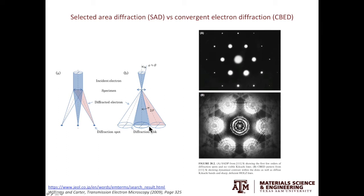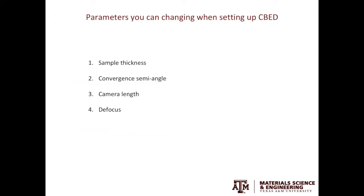Looking at the experimentally acquired diffraction patterns on the right from the textbook, the top is a regular diffraction pattern where you see spots. Down at the bottom, that's the diffraction from convergent beam electron diffraction, where you see disks.